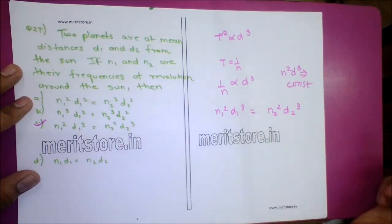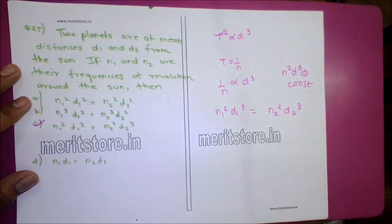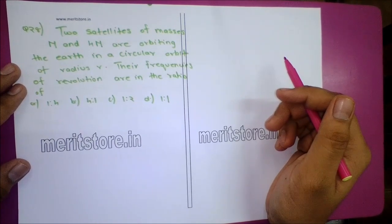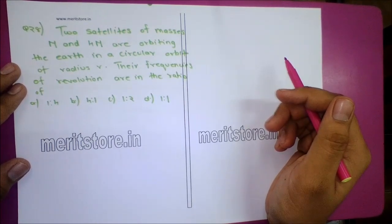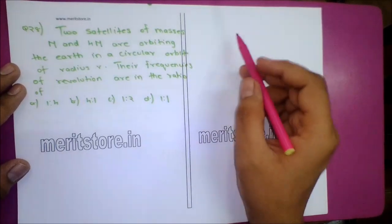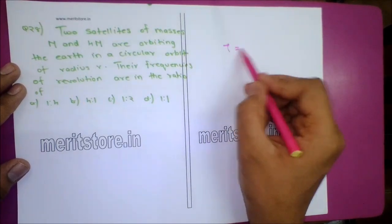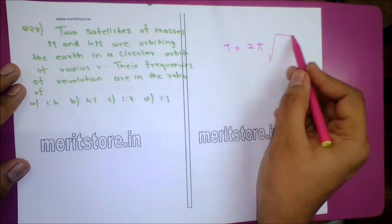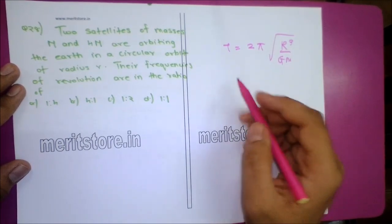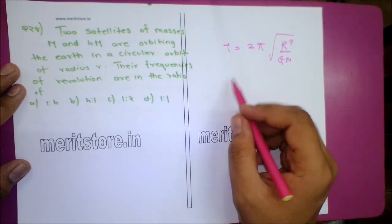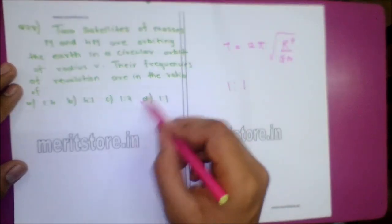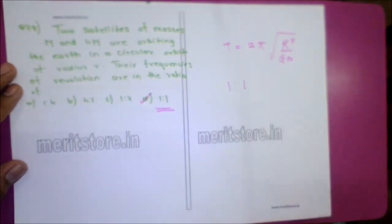Question 28: Two satellites of masses M and 4M are orbiting Earth in circular orbits of radius R. Their frequency of revolution ratio: T = 2π√(R³/GM), so period and frequency are independent of mass. The ratio of frequencies is 1:1. Option D is the correct answer.